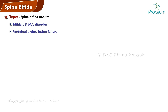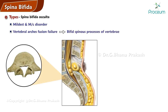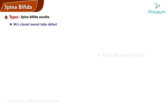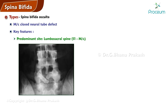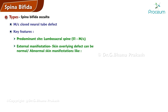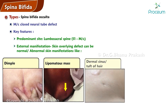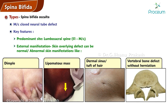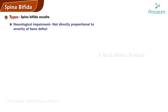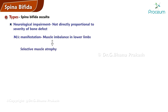In spina bifida occulta, the vertebral arch fusion failure leads to bifid spinous processes of the vertebrae. It is the most common closed neural tube defect. It usually occurs in the lumbosacral spine, with S1 being the most common site. The overlying skin can be normal or present signs like a dimple, lipomatous mass, dermal sinus, or a tuft of hair. Neurological impairment is not directly proportional to the severity of the bone defect; the most common manifestation is muscle imbalance in the lower limbs, leading to selective muscle atrophy resulting in foot deformities such as equinovarus or cavus.